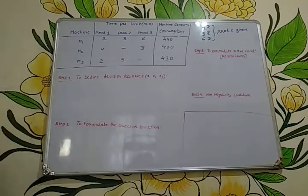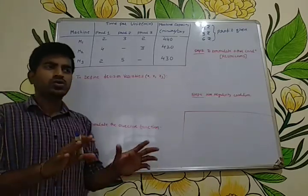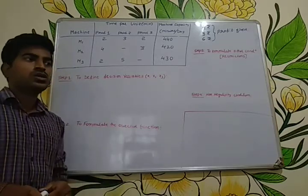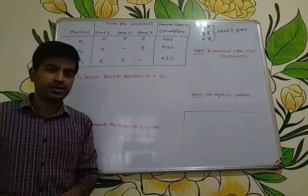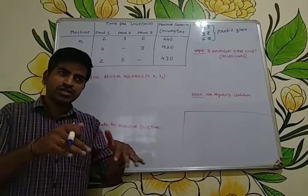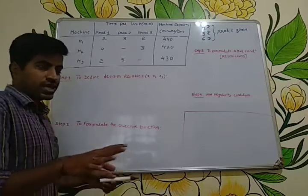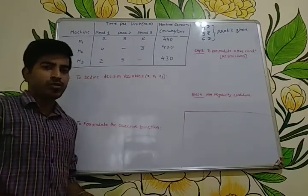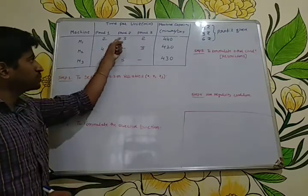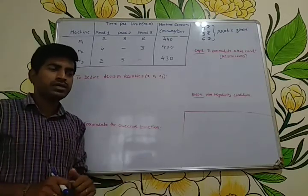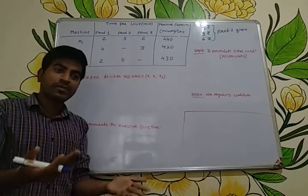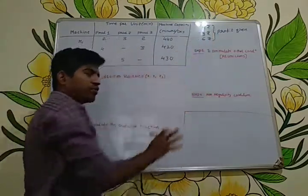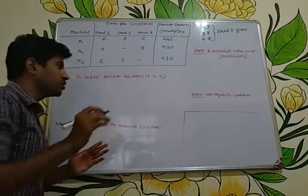There are four steps required to solve any linear programming problem. The first step is to define the decision variables x1, x2, x3. Decision variables are those variables whose values we need to find out. In this problem we need to find how many quantities of product 1, product 2, and product 3 we need to manufacture. Decision variables are those variables which are directly dependent on the profit.